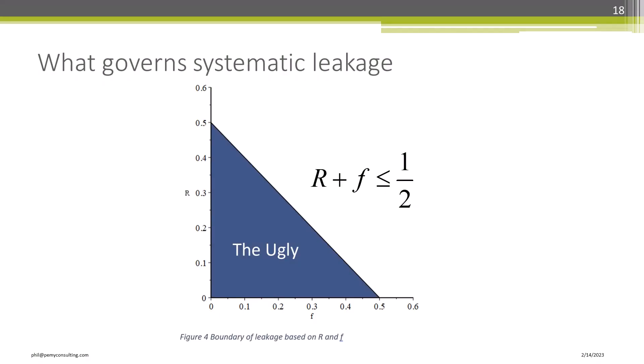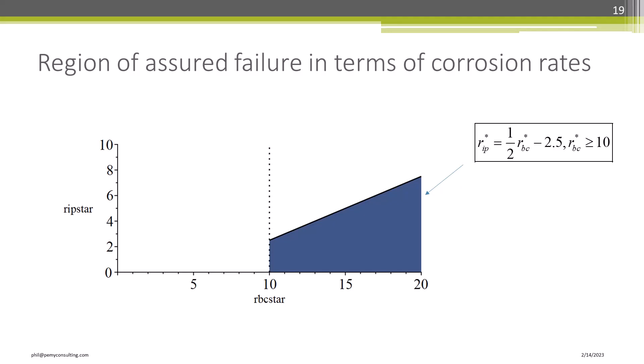Here is the ugly. The CRA method fails, and the tank bottom leaks. The previous plot is somewhat abstract, but this plot is in terms of top side and bottom side LCRs. The blue region is where the tank bottom leaks. The equation for the bounding line is shown above.